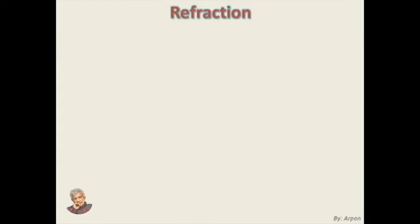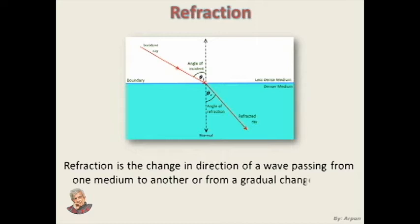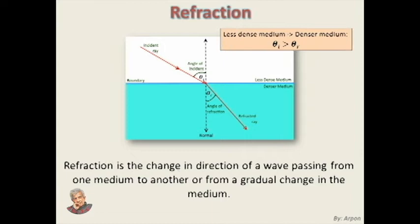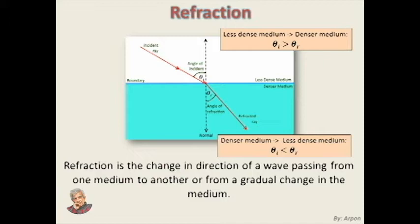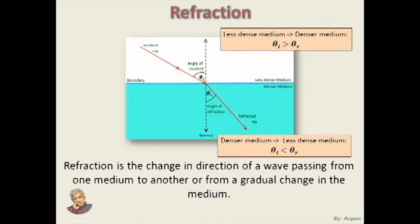Refraction is the change in direction of a wave passing from one medium to another, or from a gradual change in the medium. In the picture above, the direction of the incident ray is changed as a refracted ray. When the light ray is coming from a less dense medium to a denser medium, the refracted ray bends towards the normal as shown in the picture. When it comes from a denser medium to a less dense medium, the situation becomes opposite — the refracted ray bends away from the normal. The incident ray, refracted ray, and the normal all lie in the same plane here as well.